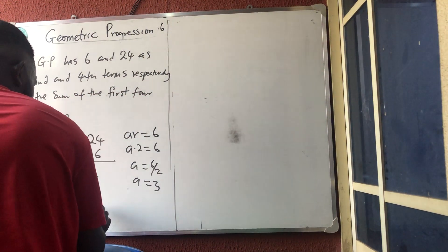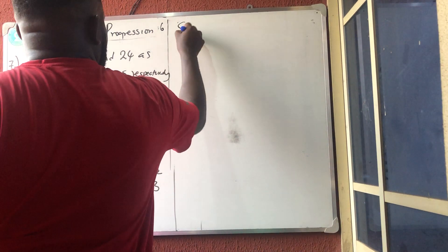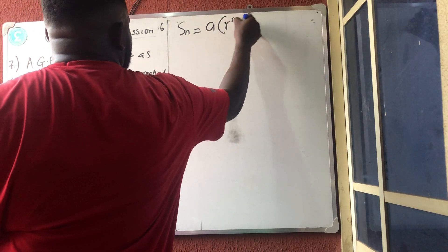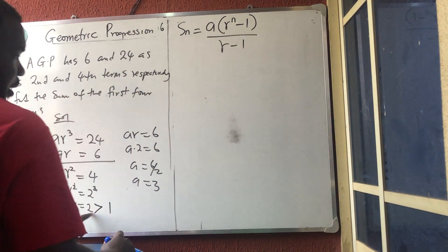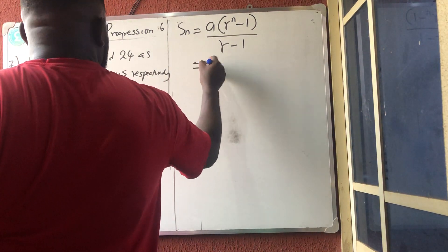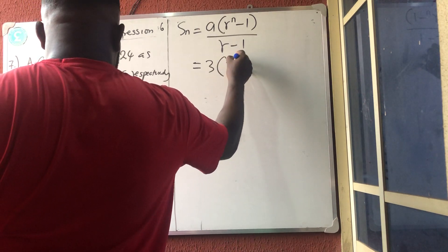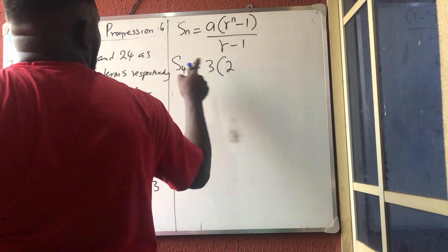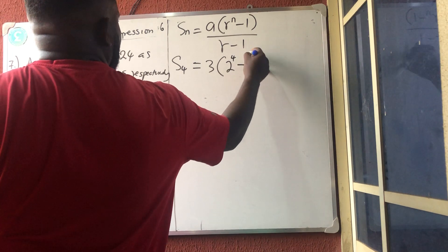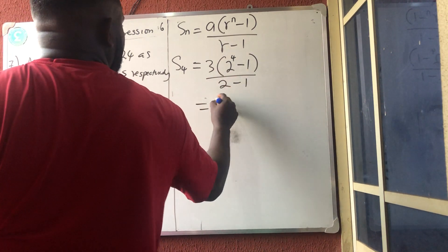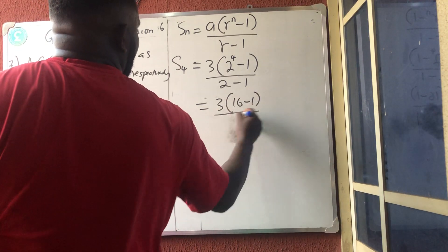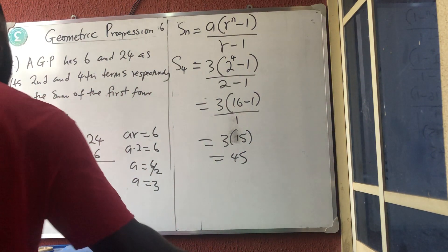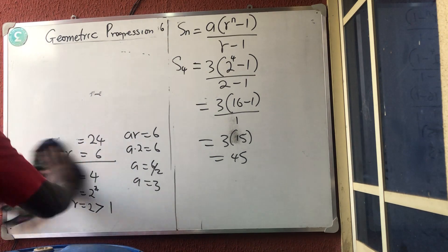Since r = 2 > 1, use the formula Sn = a(rⁿ − 1)/(r − 1). So S4 = 3 × (2⁴ − 1)/(2 − 1) = 3 × (16 − 1)/1 = 3 × 15 = 45.